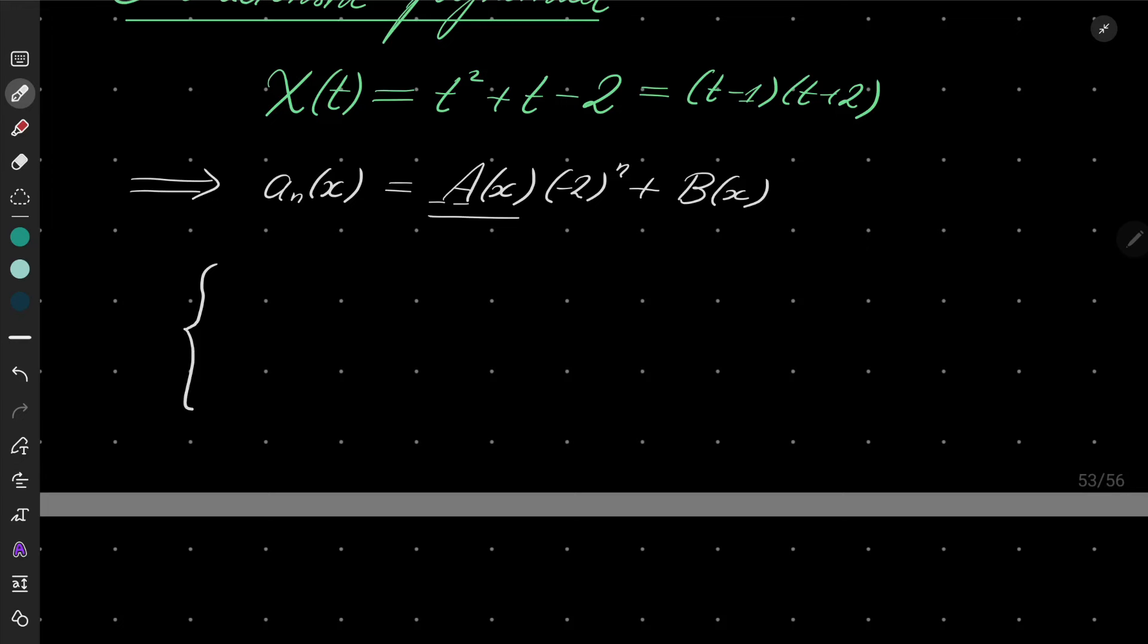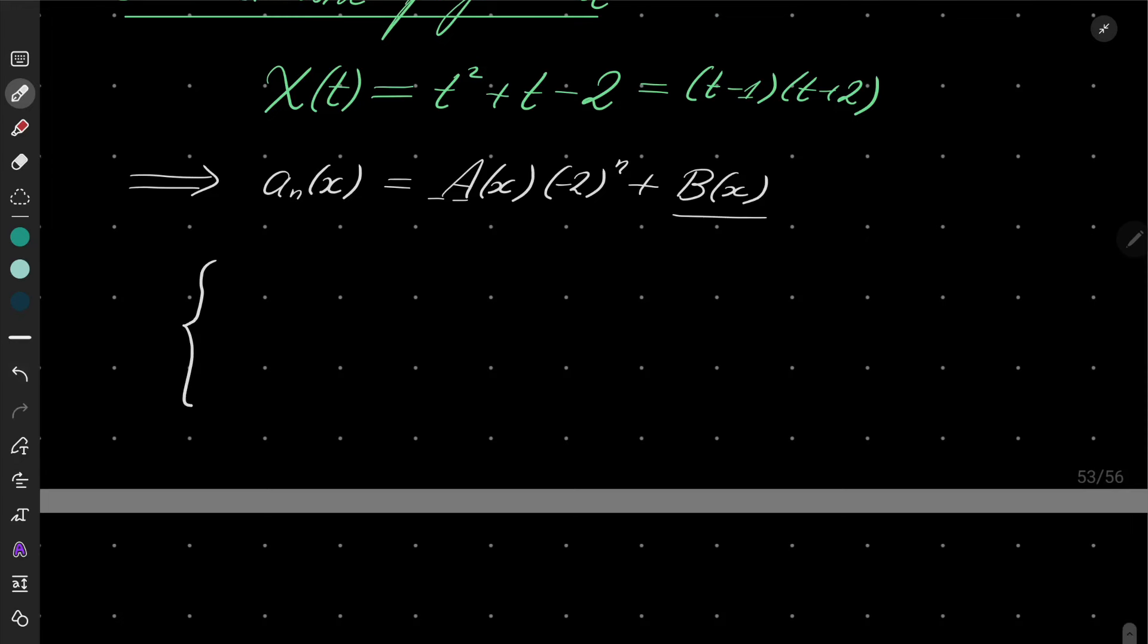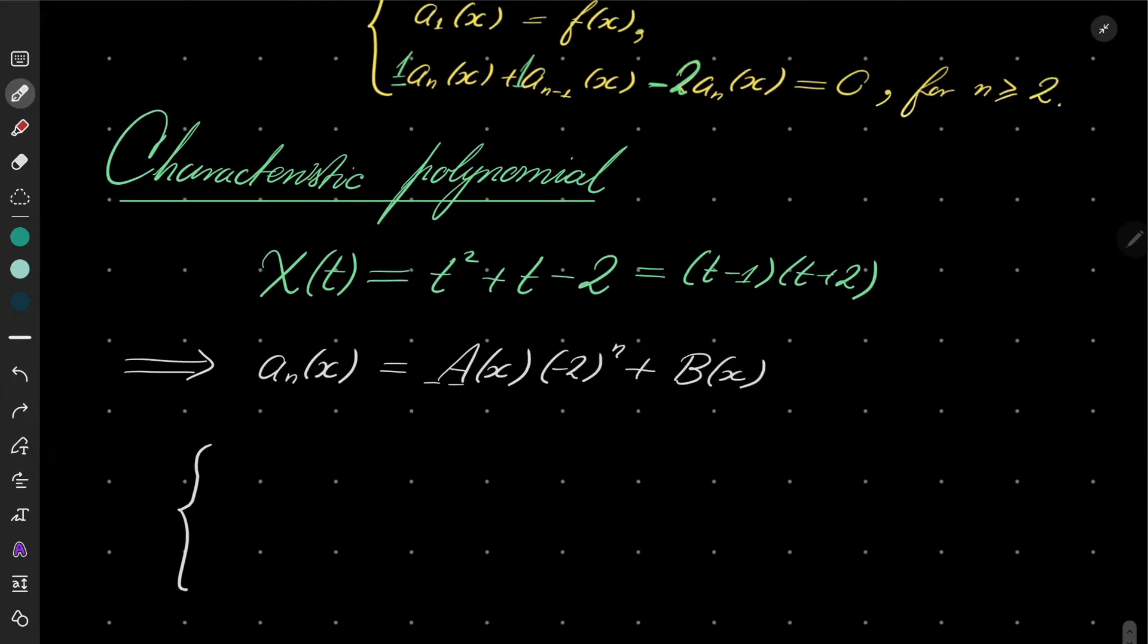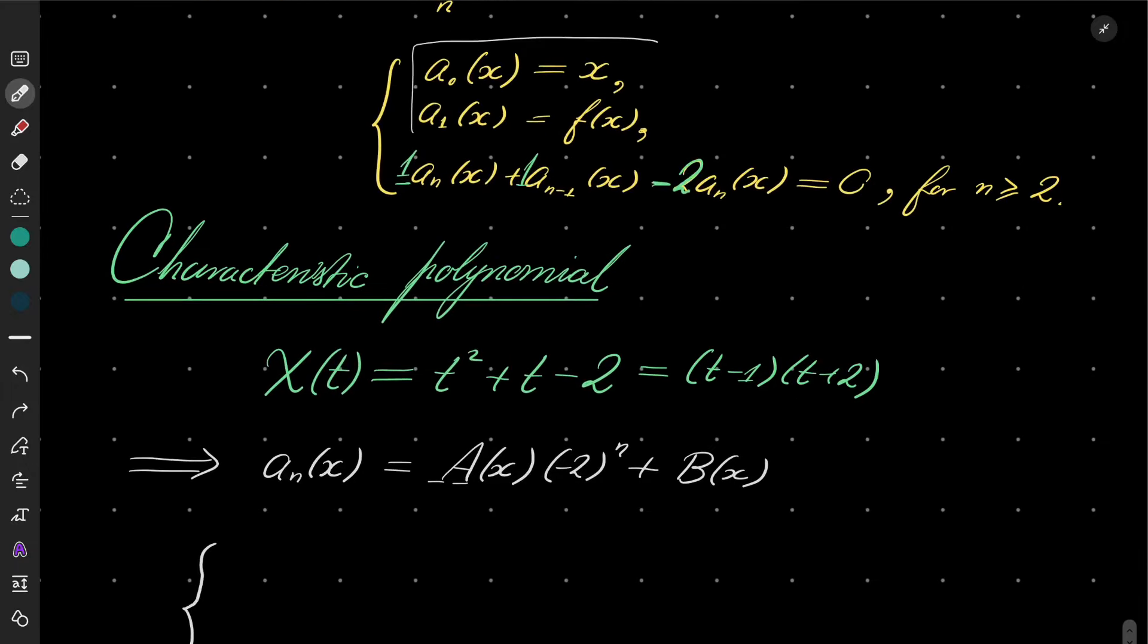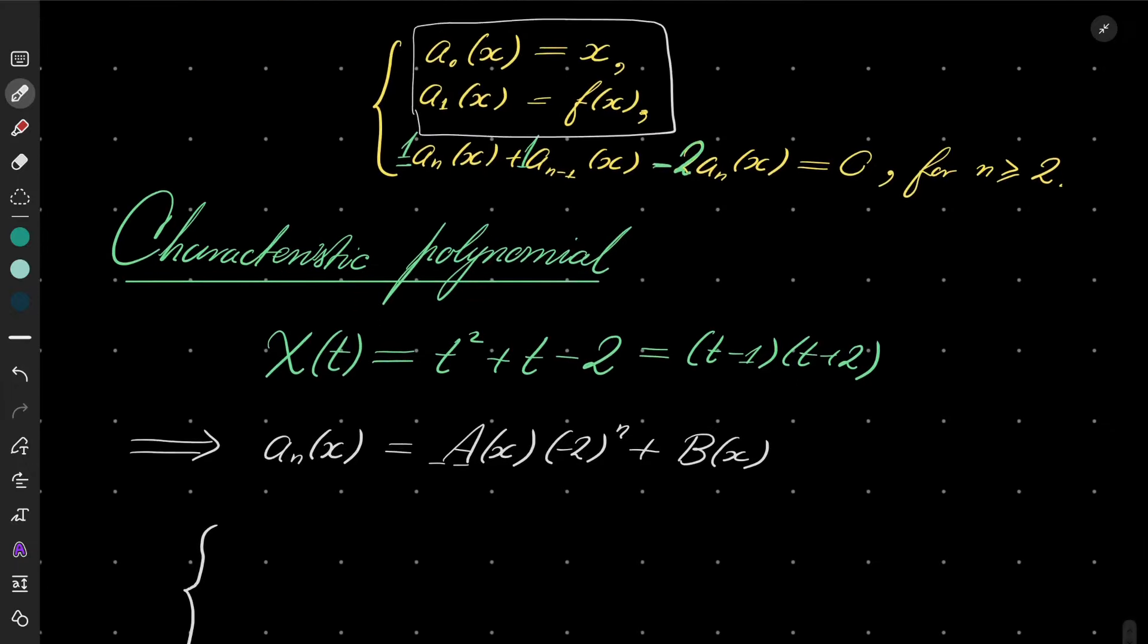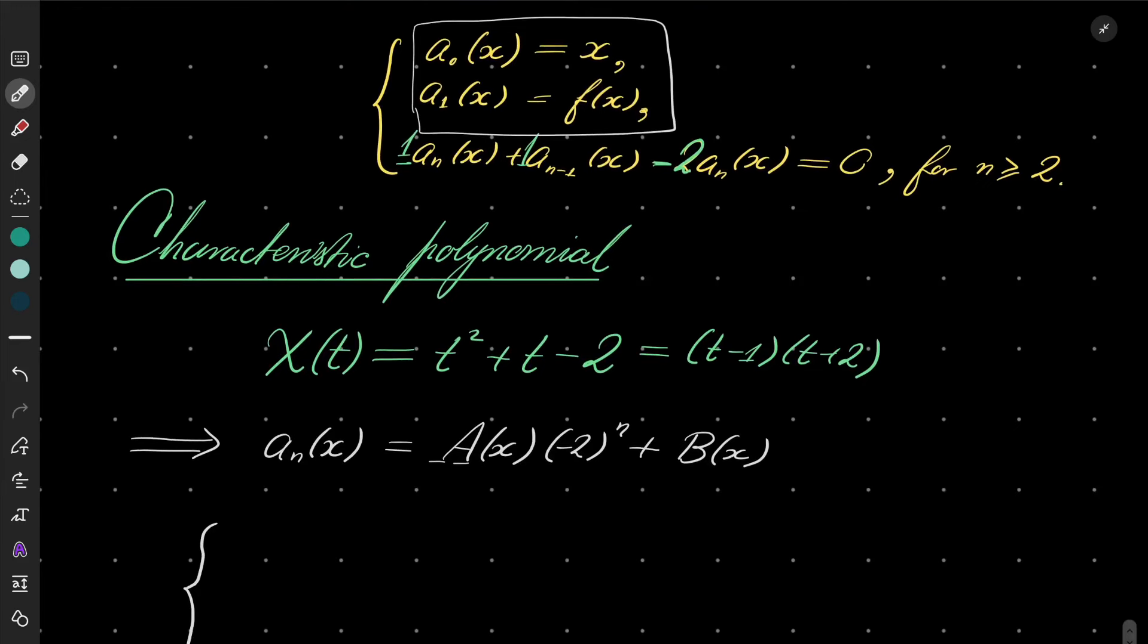Now how can I solve my recursion? In other words, how to find a(x) and b(x)? Well, they can be found using the boundary conditions of our recursion.